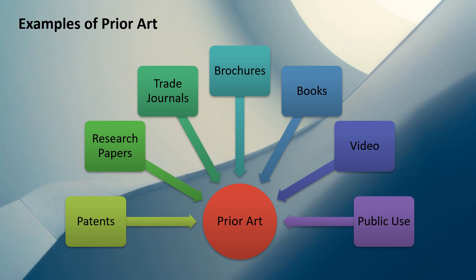Brochures or catalogs — basically advertisements from a company stating what products they have or their advantages — can also be considered prior art. Books or manuals are also considered prior art. Videos are as well; it's not necessary that prior art be only in the form of a published document. Public use is also prior art: a product being used by people, even if it's not in the form of a patent or document, can be considered prior art.